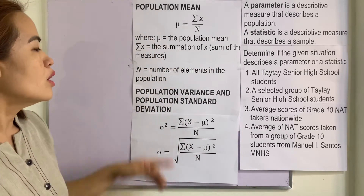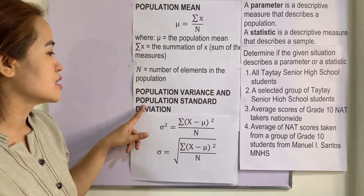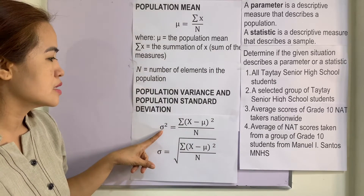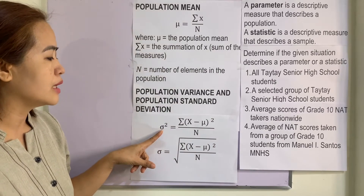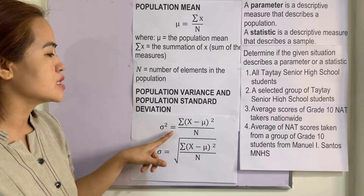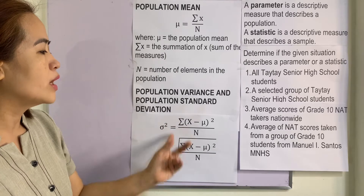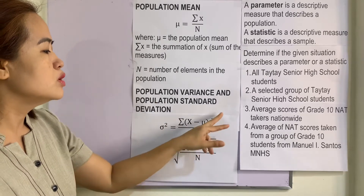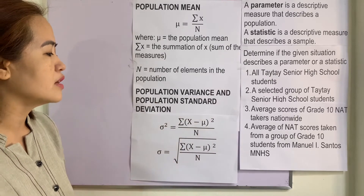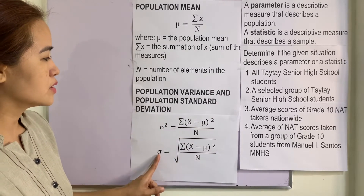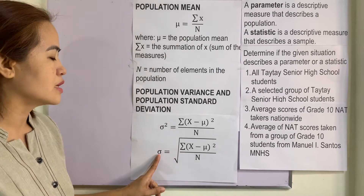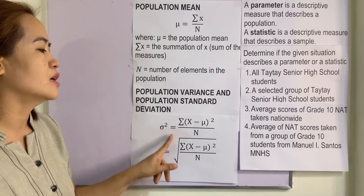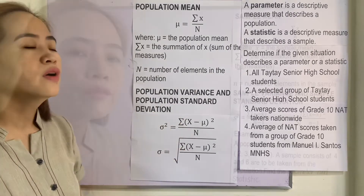For the population variance and standard deviation, the formula is: sigma squared equals summation of (x minus mu) squared divided by n. To get the standard deviation, you simply take the square root of that.